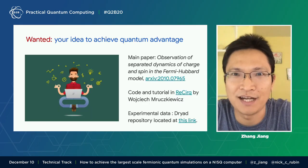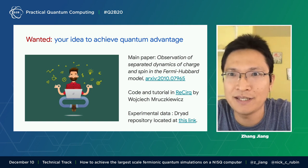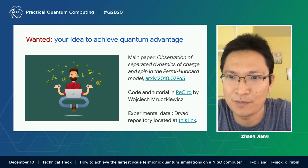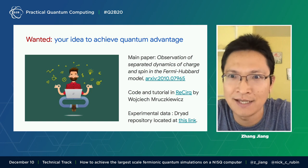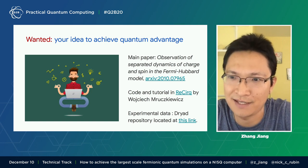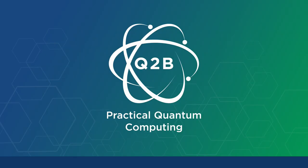And your ideas to achieve quantum advantage are wanted. So here is the main paper of the Fermi-Hubbard experiment. We have all the code tutorial written by Wojciech, and the experimental data is in the link below. Thank you for your attention.